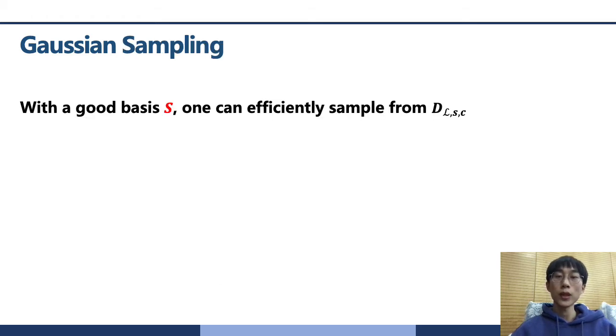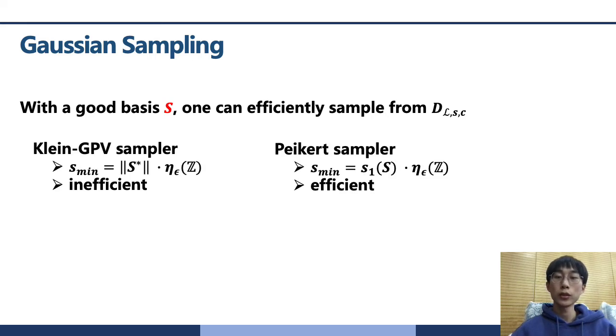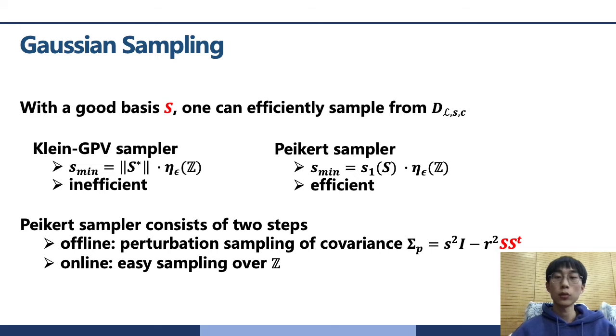With a good lattice basis S, we can efficiently sample from the discrete Gaussian. There are two widely used samplers. Klein GPV sampler and Peikert sampler. The Peikert sampler is more efficient and widely used in MP trapdoor. It consists of two steps. The offline phase, sample a perturbation vector of covariance sigma_p. The online phase is an easy sampling over integer.